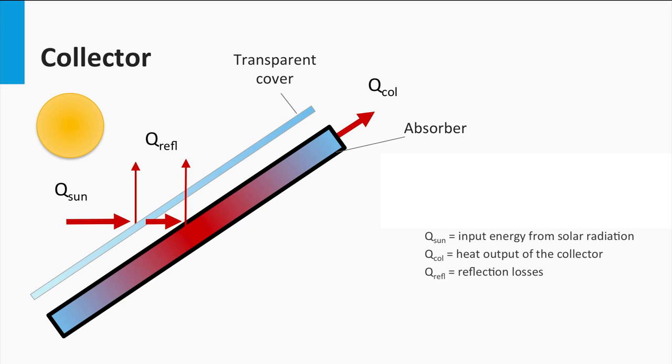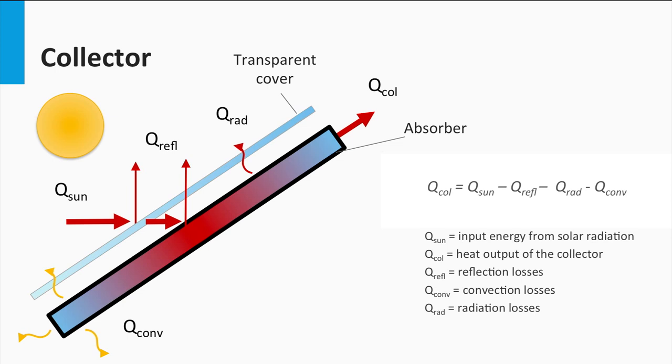is lost as reflection either in the encapsulation or in the absorber itself. Other losses are related to the heat exchanged with the surrounding air by the convection mechanism, represented by Q_convection. Finally, there are also losses by radiation from the heated absorber. All these quantities can be easily correlated by a simple energy balance.